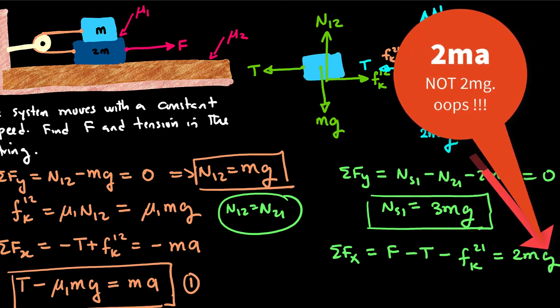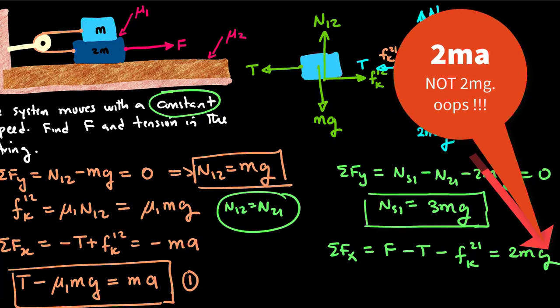But what do we know? We know that the system moves with a constant speed. The fact that the speed of the system is constant is an indication that a is equal to zero.